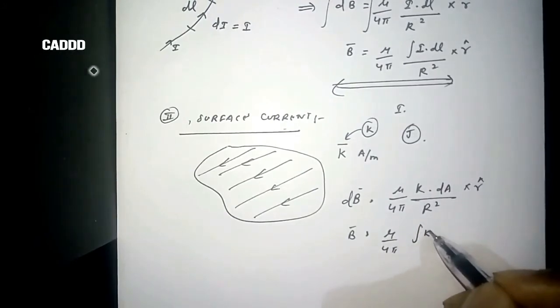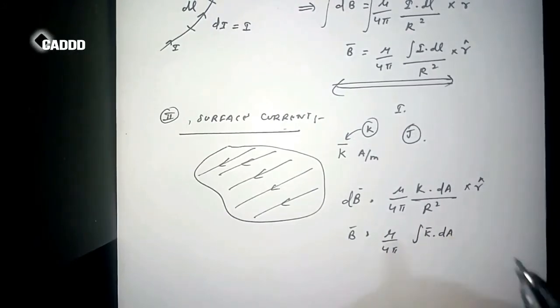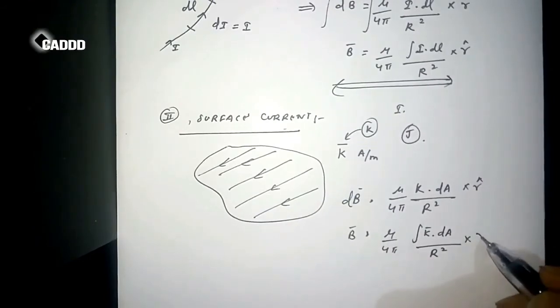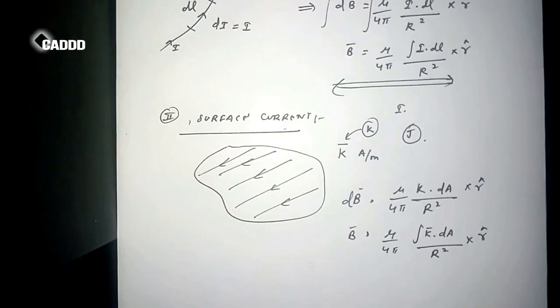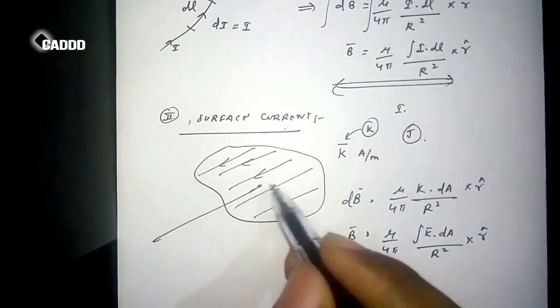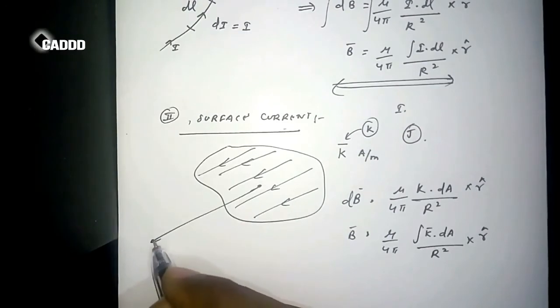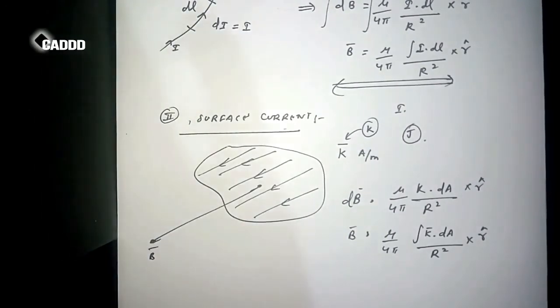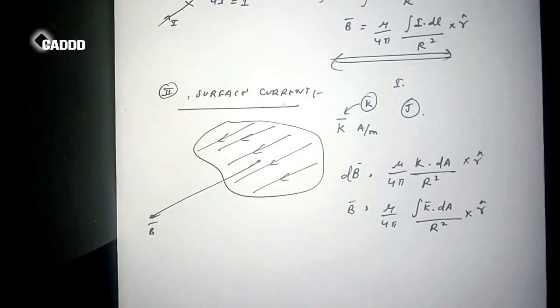So B will be mu by 4 pi, integration of surface current with respect to the area by distance square into r cap. This distance is from the surface to the point where we are calculating the magnetic field density.